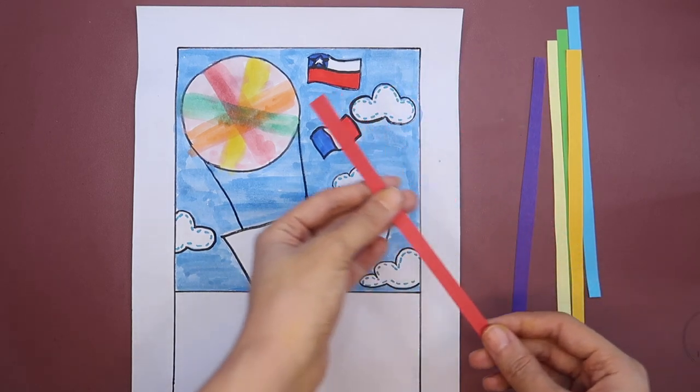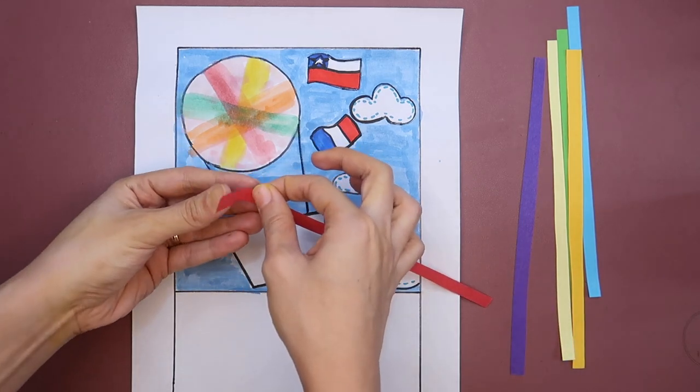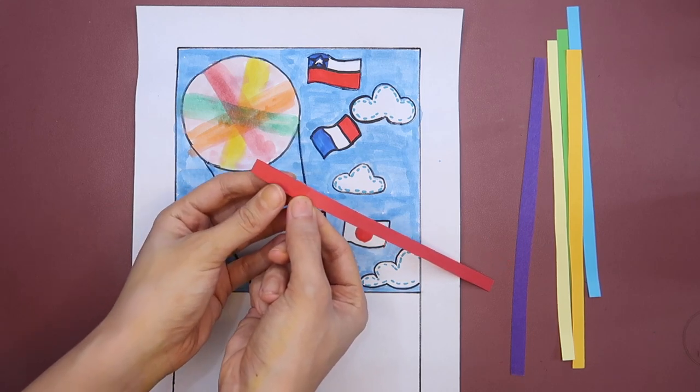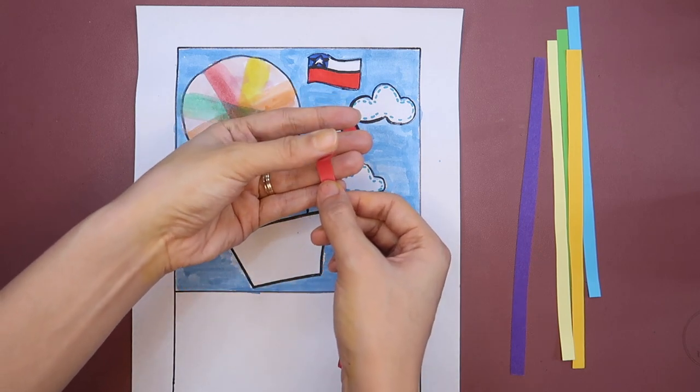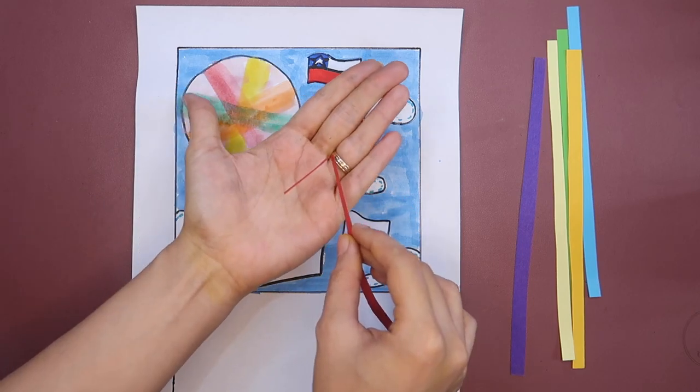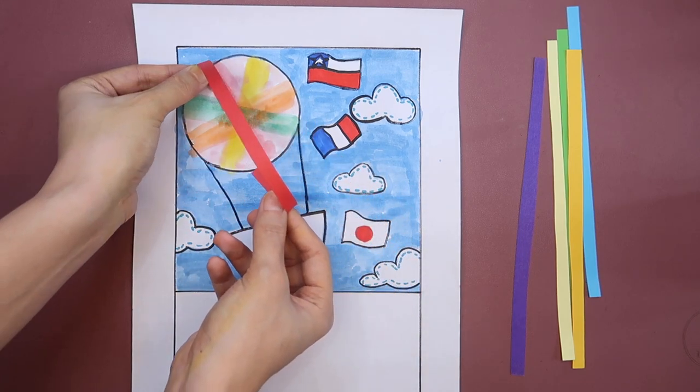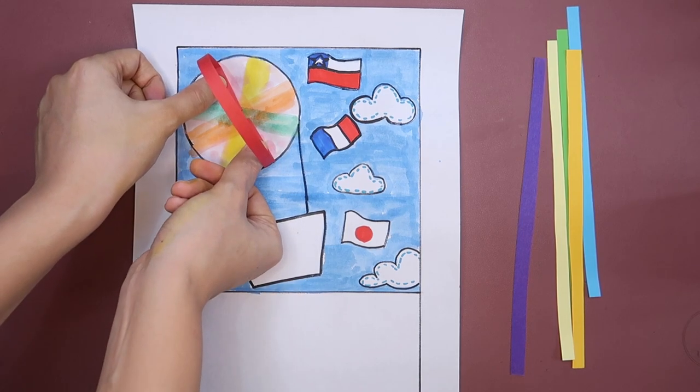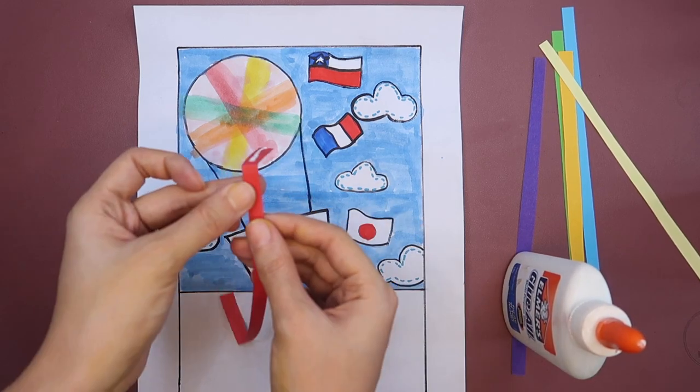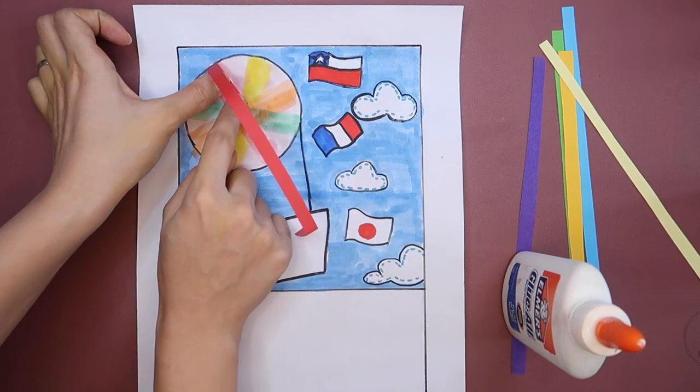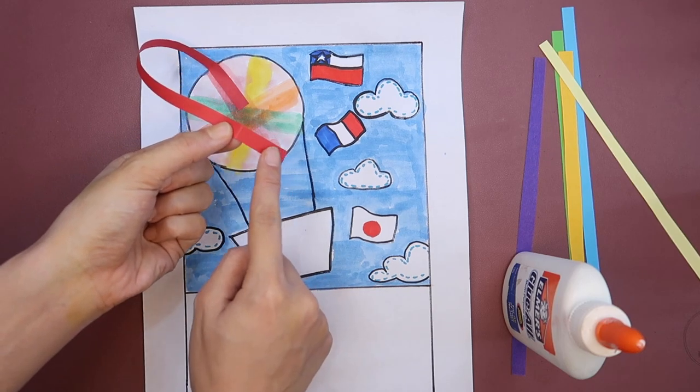Get one strip of paper and fold the ends approximately 1 inch. We'll use the folded part to make the strips stick in the paper just like this. Apply glue on the folded part and place it inside the circle like so. Apply glue again on the other end and attach it in the opposite side of the circle.